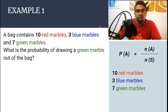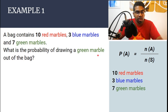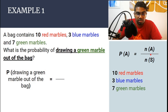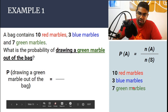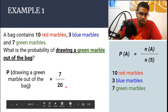Before we even begin to answer the question, you need to identify what the event is. That can be found in the question: what is the probability of drawing a green marble out of the bag? This is our event. The event here is drawing a green marble out of the bag. This is how we write the probability — P, bracket, the event in the bracket. NA, the number of times the event occurs, is the number of green marbles in the bag, which is 7. NS is the total number in our sample: 10 plus 3 plus 7, which makes 20. The probability of drawing a green marble out of the bag is 7 out of 20.